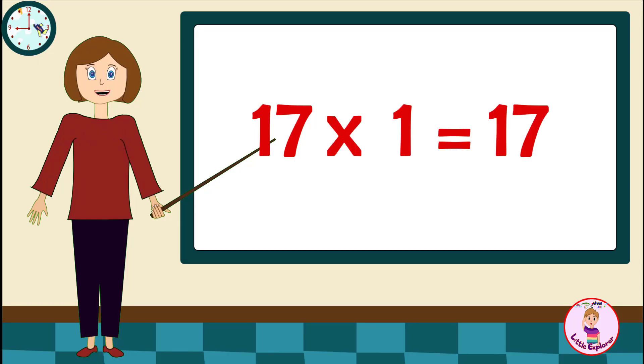17 ones are 17, 17 twos are 34, 17 threes are 51, 17 fours are 68, 17 fives are 85, 17 sixes are 102, 17 sevens are 119, 17 eights are 126, 17 nines are 153, 17 tens are 170.